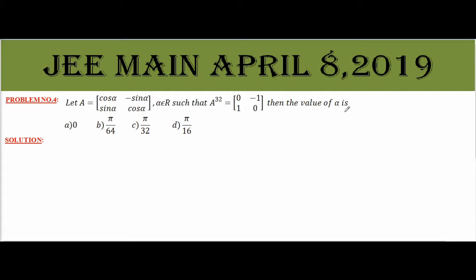This problem is easy, but the calculation is a bit heavy, so it is a time consuming problem. If you study this problem, it is not a standard concept. If we proceed, A power 32 is a large power, so we start from a smaller power — A square, A cube — and then generalize.